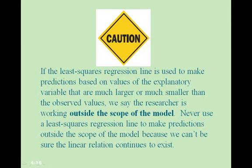We must exercise caution. If the least squares regression line is used to make predictions based on values of the explanatory variable that are much larger or much smaller than the observed values, we say the researcher is working outside the scope of the model. Never use a least squares regression line to make predictions outside the scope of the model, because we can't be sure the linear relation continues to exist.